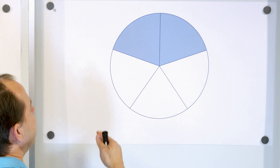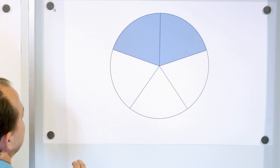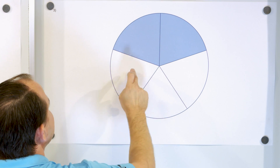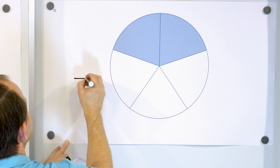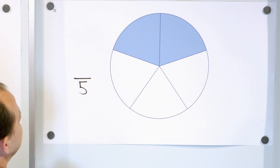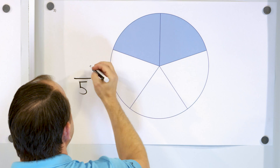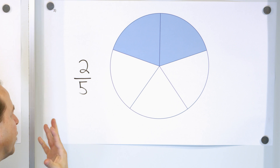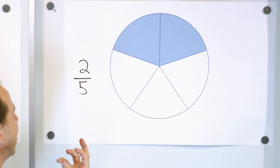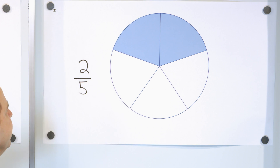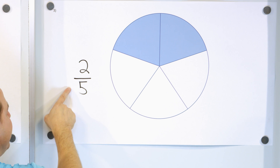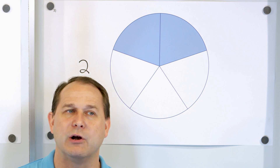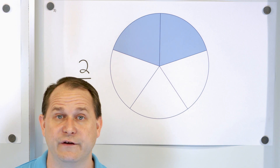Let's take a look at the next one. How many pieces have I cut this into altogether? One, two, three, four, five — so it's out of five pieces. How many do I have? One, two — I only have two out of five pieces. This is called two fifths. The top number is how many pieces I have; the bottom number is how many pieces I've cut the thing into.